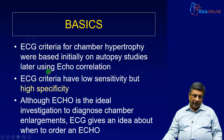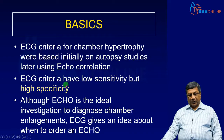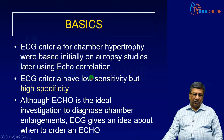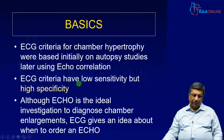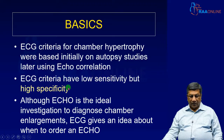We must always understand that ECG criteria have low sensitivity and high specificity. High specificity means that if a particular chamber enlargement pattern is seen in the electrocardiogram, most often the chamber enlargement is truly present. Low sensitivity means a normal ECG does not rule out a chamber enlargement.